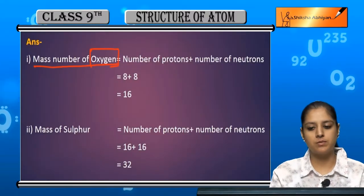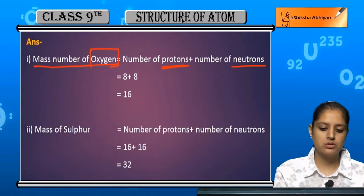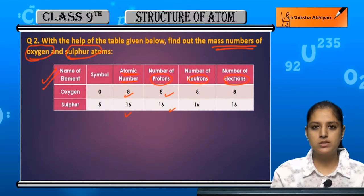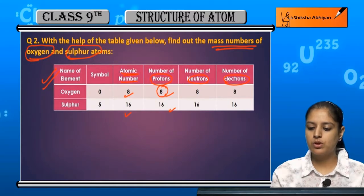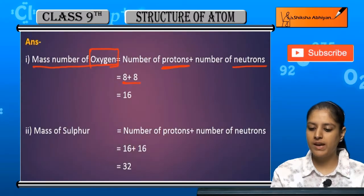Pehle oxygen ka. So mass number hota hai number of protons plus number of neutrons. So this case me, oxygen ke liye number of protons hai 8, number of neutrons hai 8, so ho gaya 8 plus 8 equals 16.